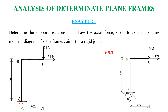At point C, two loads act: a horizontal rightward load of 2 kN and a vertically downward load of 10 kN. At support A there is a fixed support with three reactions: vertical reaction VA, horizontal reaction HA, and moment reaction MA. There are three unknowns and three equations of equilibrium, confirming this is a determinate frame.